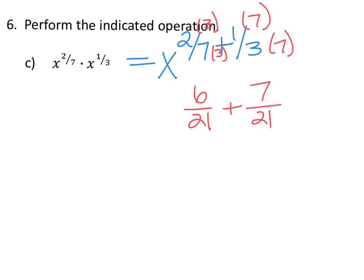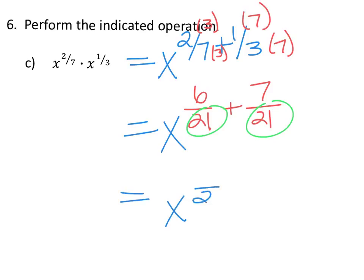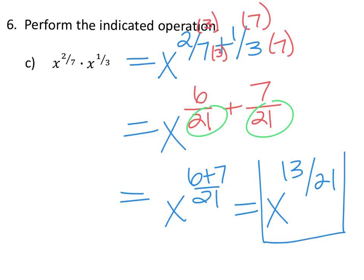Do that to the top and bottom. So now we have x raised to the 6/21 plus 7/21. Now that we have the same denominators we're going to keep them the same and add the top: 6 plus 7. So we have x raised to 13/21. Since 13/21 can't be reduced further, this is our final answer.